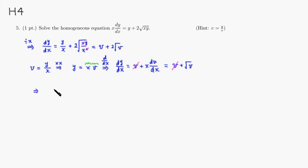So you have x times dv over dx, there's no y anymore, and this is equal to... Actually sorry, I messed up somewhere. I forgot to put 2 here, so it's 2 times square root of v.